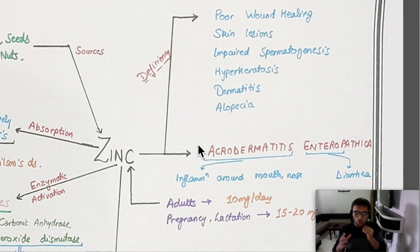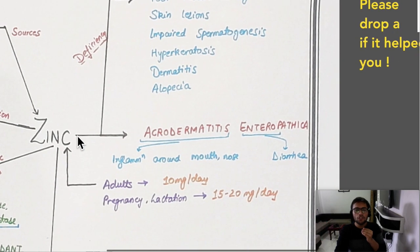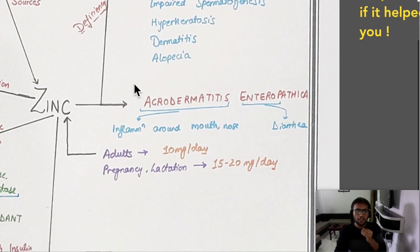Regarding zinc deficiency: wounds won't heal properly, leading to tissue destruction and poor wound healing with skin lesions. There will be hyperkeratosis, dermatitis, and alopecia — all dermatological problems. You also need to remember impaired spermatogenesis. The characteristic deficiency lesion of zinc is acrodermatitis enteropathica — dermatitis with inflammation around the mouth, nose, and fingers, plus diarrhea.